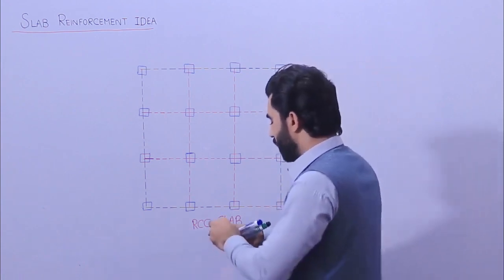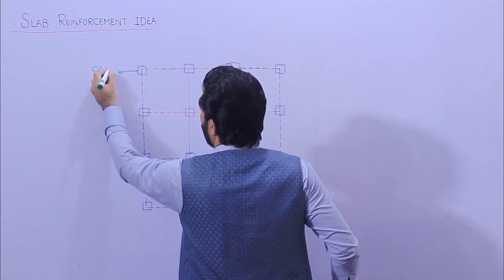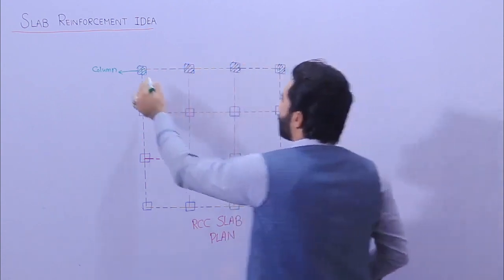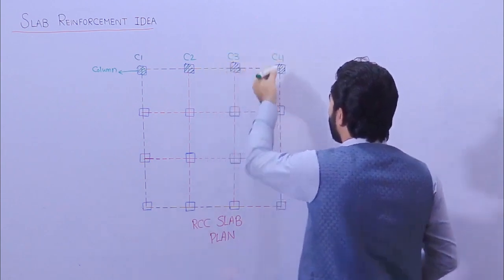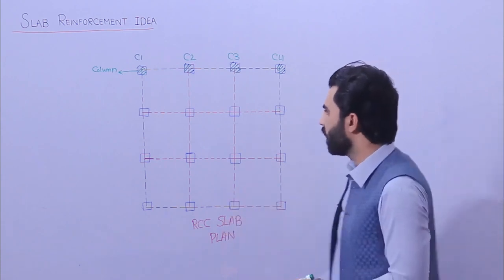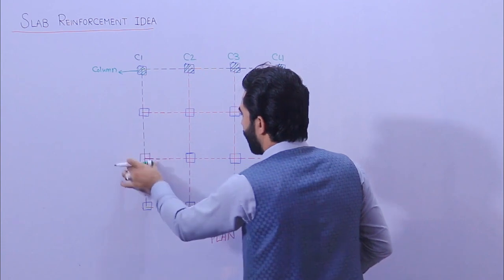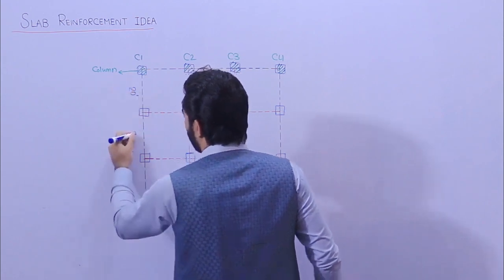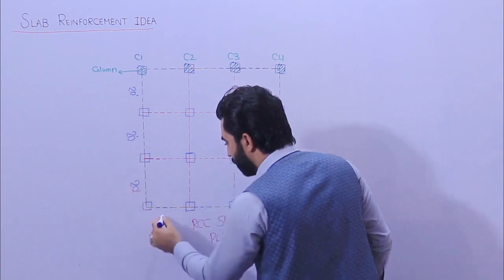This is a slab idea, specially for reinforcement. As you can see, these are columns. This is column C1, this is C2, this is C3, and this is C4 — just for reference. Now the link between each column: suppose this span is 20 feet, this is also 20 feet, this one is also 20 feet, and for example this one is 16 feet.